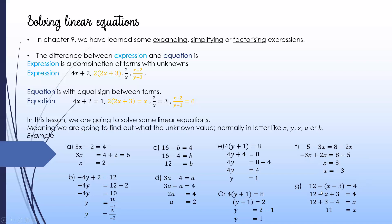For the next question, expand the bracket first. Be careful: negative times negative becomes positive. After expanding, collect the numbers on one side as usual. The negative x is brought over to become positive x. The final answer is x equals 11. We can verify by substituting back: 12 minus 11 minus 3 equals 4, confirming we found the unknown that makes the equation correct.